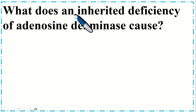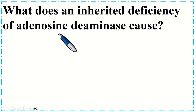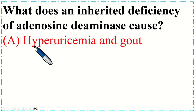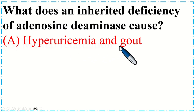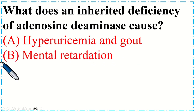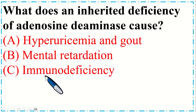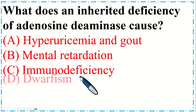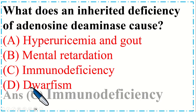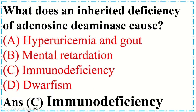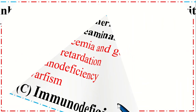What does an inherited deficiency of adenosine deaminase cause? Option A. Hyperuricemia and gout, B. Mental retardation, C. Immunodeficiency, and D. Dwarfism. The correct option is C, immunodeficiency.